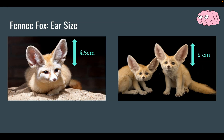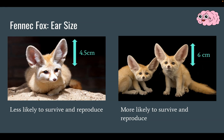So how does it work on an individual level? Let's go back to the fennec fox example. Fennec foxes are foxes that live in a desert. They use their ears for two things: first, for hunting — they use their large ears to hear their prey — and second, they use their large ears to cool down. Larger ears are more advantageous. The fox on the left has ears that are 4.5 cm long, while the fox on the right has ears that are 6 cm long. The fox on the left is less likely to survive and reproduce.